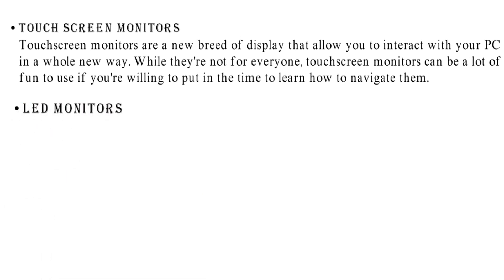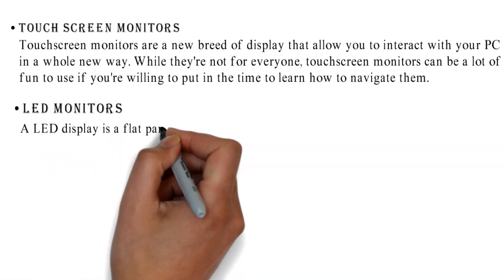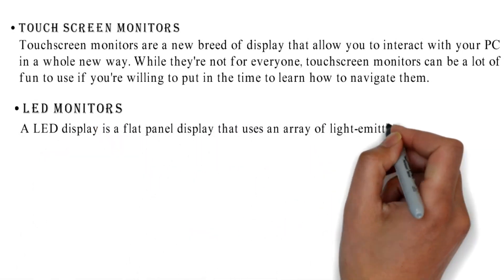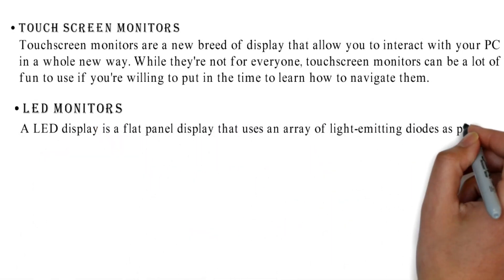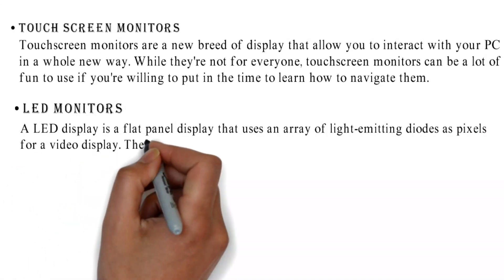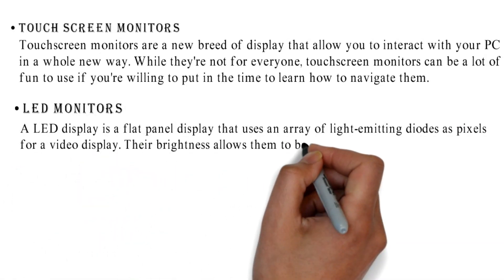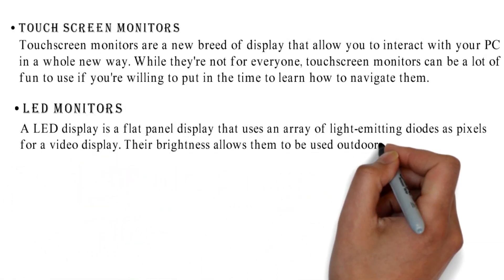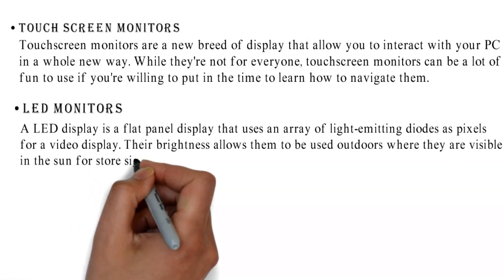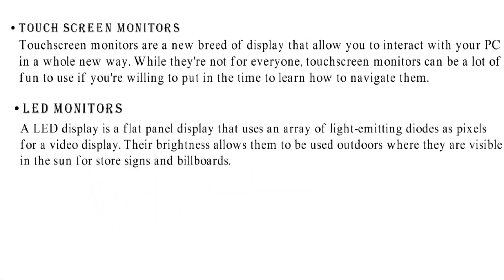LED Monitors. A LED display is a flat panel display that uses an array of light emitting diodes as pixels for a video display. Their brightness allows them to be used outdoors where they are visible in the sun, for store signs and billboards.